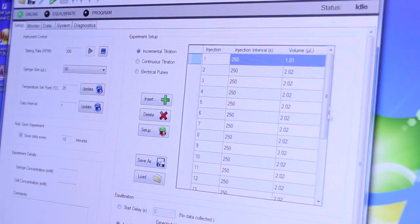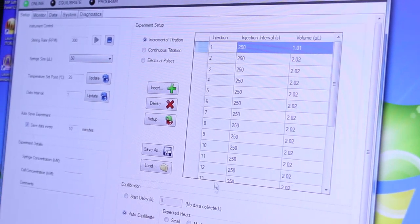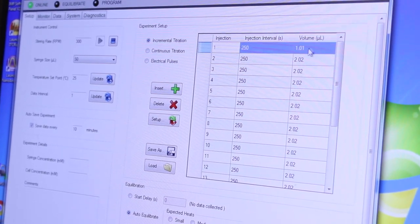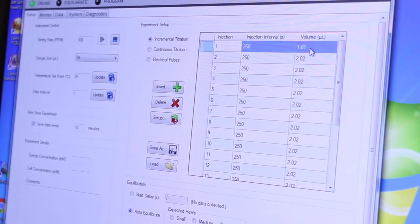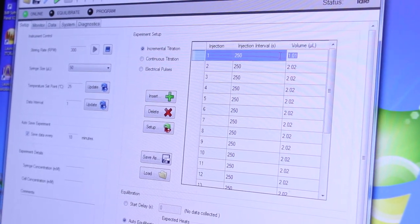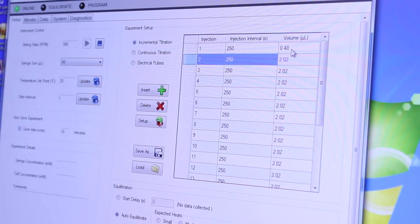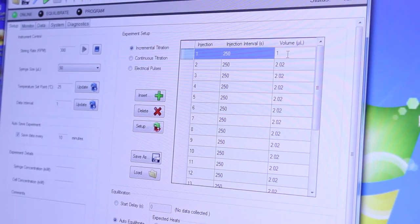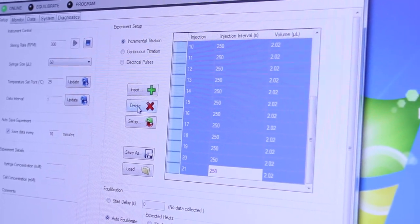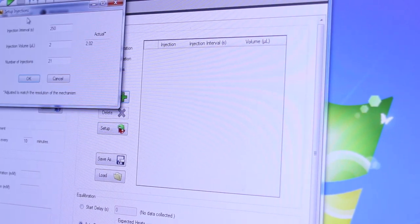Certain experiments may require a different stirring rate just type in the number here and then click start and you should hear the syringe start stirring during this equilibration period it's good idea to set up the titration protocol for our experiment. This table here lists the number of injections the time between each injection in seconds and the volume to be injected. The table can be edited by hand if you wish it will adjust the number to match the resolution of the instrument.